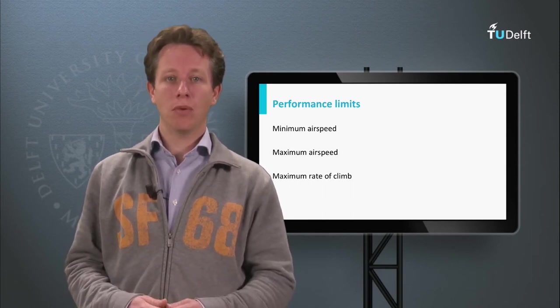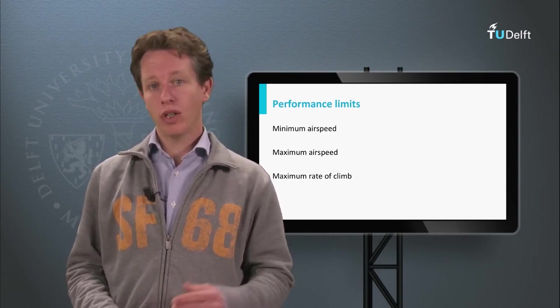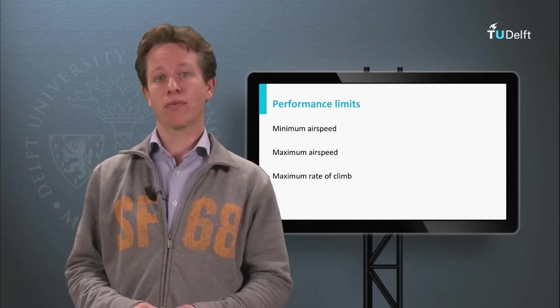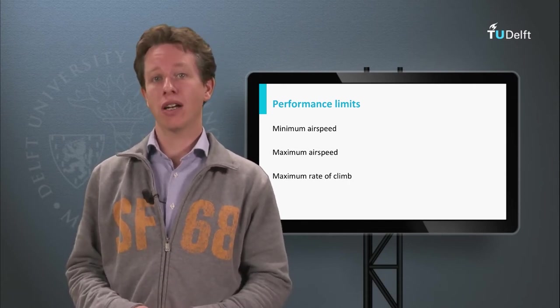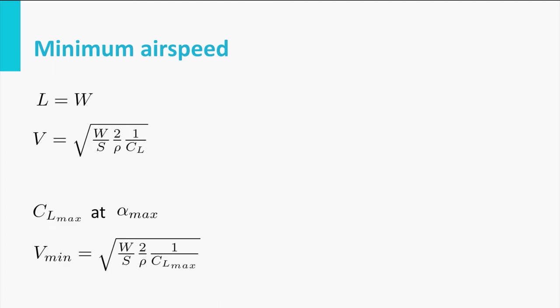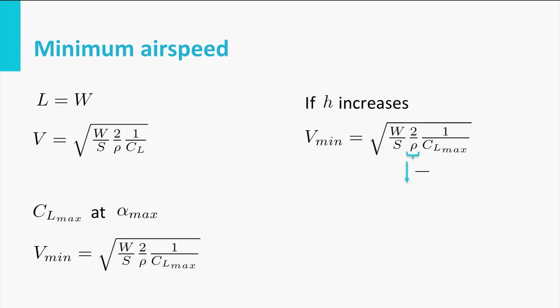Let us start with the minimum airspeed. We already know that in steady horizontal flight lift equals weight, and from this we can derive the airspeed equation. In order to fly as slow as possible, the angle of attack should be maximum. At higher altitude, air density reduces and therefore the minimum airspeed increases, simply because of the thinner air.